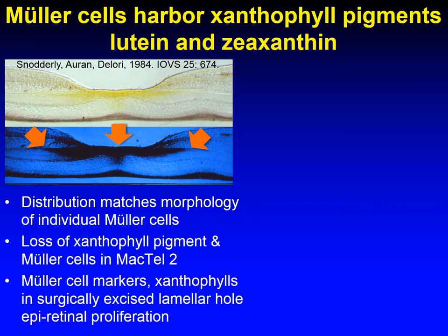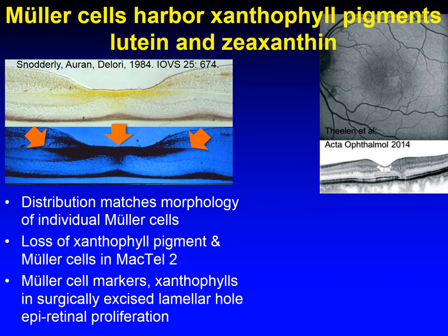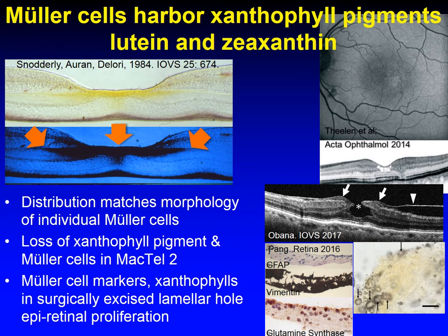In the Henley fiber layer is a strong signal for the yellow xanthophyll pigment, lutein and zeaxanthin, which are replenished from the diet and are part of the AREDS-2 formulation recommended for AMD patients. Recent data strongly suggests that these pigments reside in the Mueller cells. The distribution of the macular pigment matches well the morphology of individual Mueller cells. In a disease called MacTel-2, there is loss of both the macular pigment and degeneration of the Mueller cells. Mueller cell markers and xanthophyll pigments are found in surgically excised tissue from the macula.